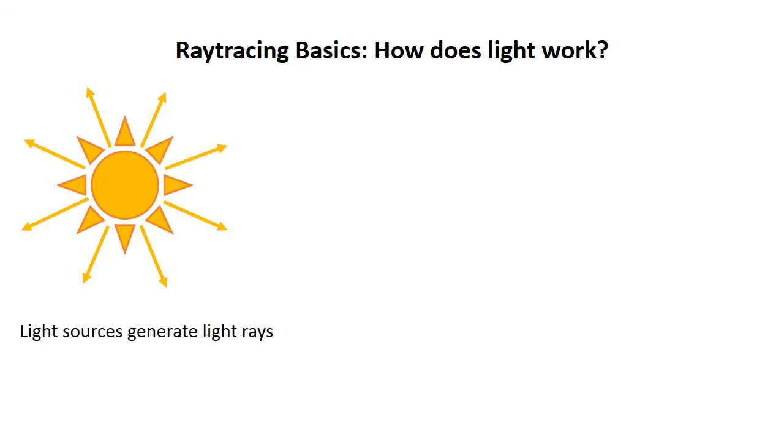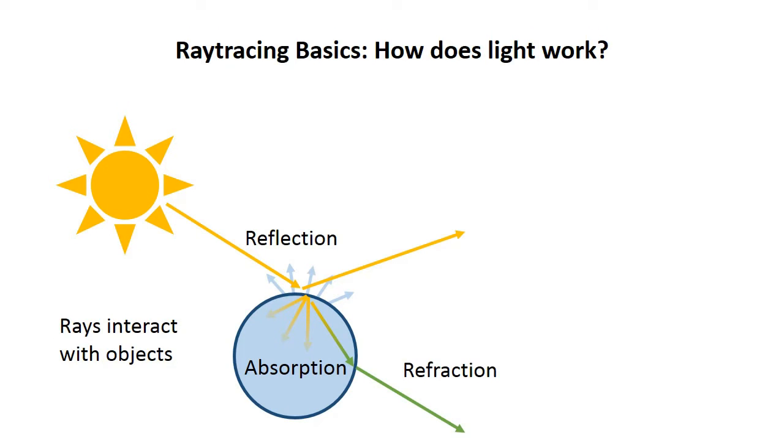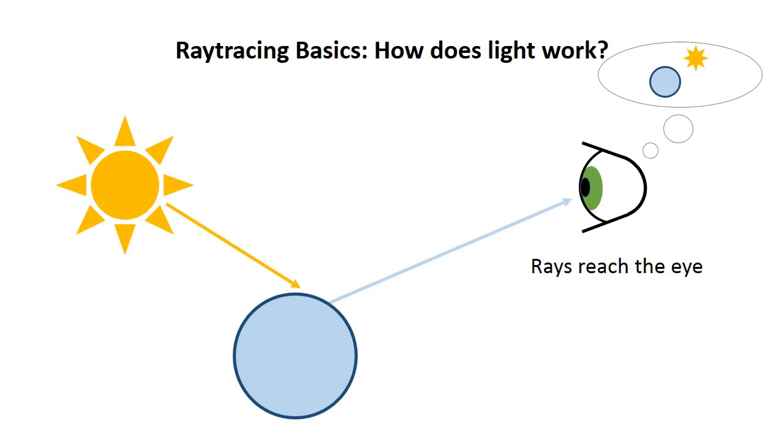We're going to start with the basics. How does light work? Light sources generate light rays. Those rays can then interact with objects, and eventually, rays meet your eye. Your eye can interpret the color of those rays and reconstruct an image in your brain.